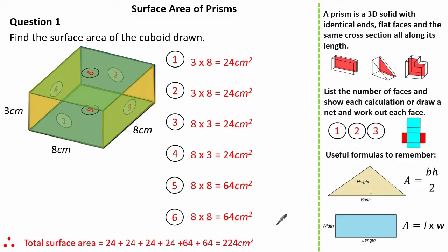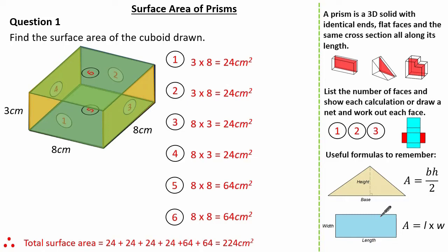So really you have a choice: you can work out the area of each face and indicate it on the net, or you can use a systematic approach whereby you list how many faces you have and then work out the total surface area. Two important formulas to remember are the area of a triangle — base times perpendicular height divided by 2 — and the area of a rectangle or square, which is length times width.